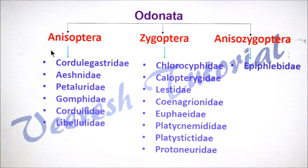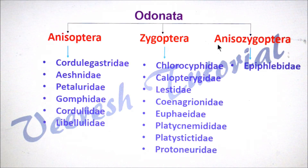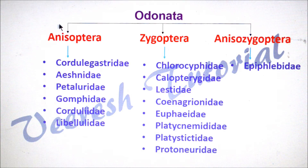There are three suborders present in this order, namely Anisoptera, Zygoptera, and Anisozygoptera. These are the families belonging to the respective suborders.